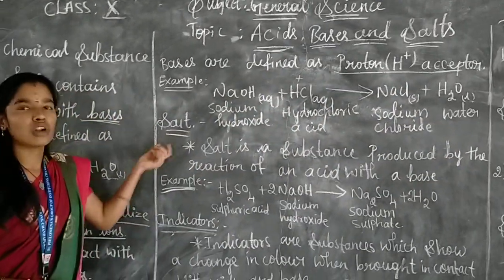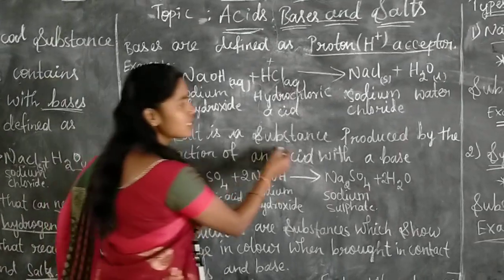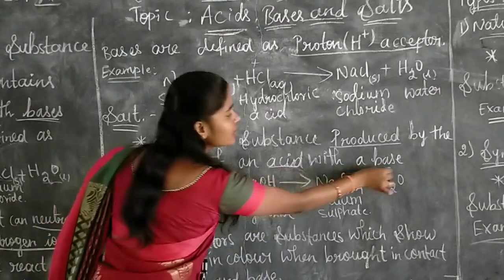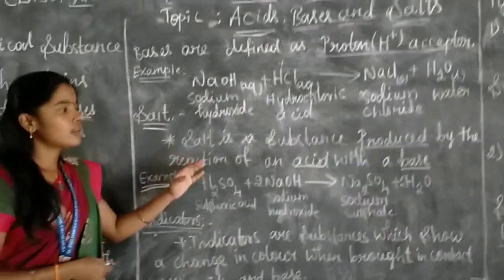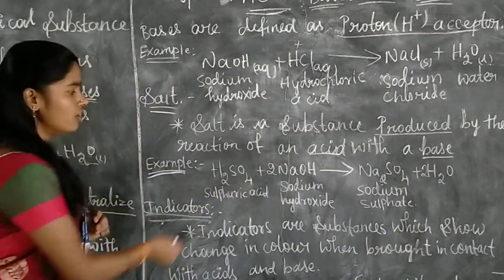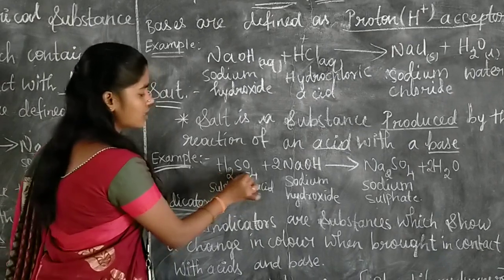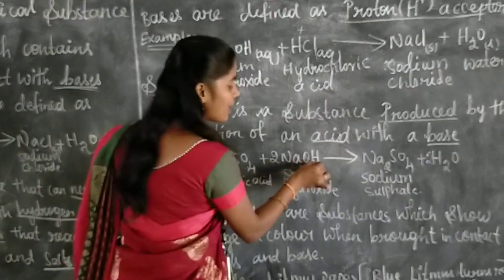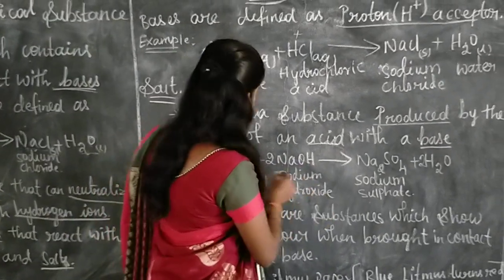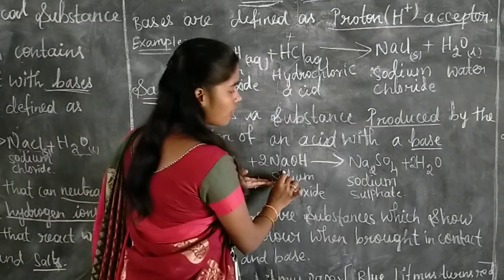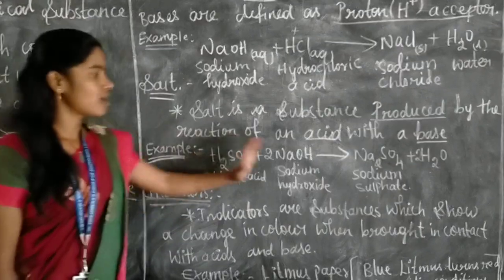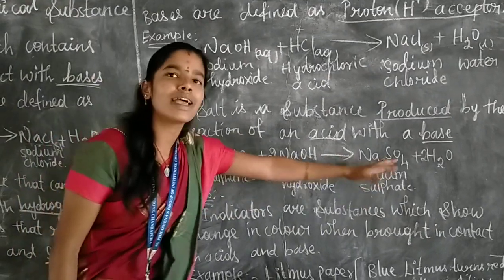The next topic is salt. Salt is a substance produced by the reaction of an acid with a base. When acid reacts with base, you get salt and water. For example, sulfuric acid reacting with sodium hydroxide (NaOH) will give sodium sulfate and water. Wherever an acid reacts with a base, you will get salt and water.